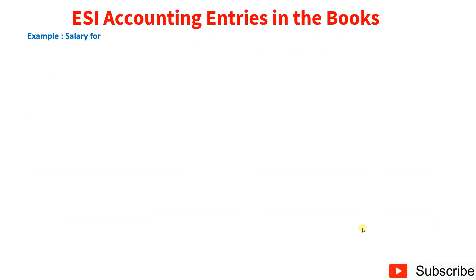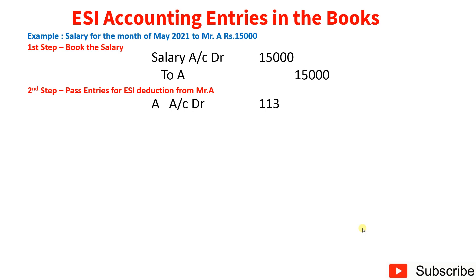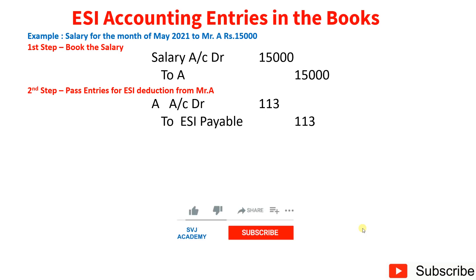ESI accounting entries in the software, step by step. For salary of Mr. A for May 2021 — Rs. 15,000. Step 1: book the salary — debit Salary account Rs. 15,000, credit Mr. A Rs. 15,000. Step 2: record ESI deduction from Mr. A — debit Mr. A Rs. 113, credit ESI Payable Rs. 113. We open an ESI Payable account to record this liability.